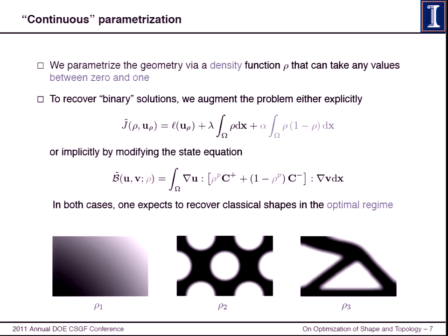The idea is that you augment your problem. For example, for the compliance problem, you either add a penalization term. This penalizes intermediate densities. If rho is between 0 and 1, this is a positive quantity, so you penalize this. This approach typically doesn't actually work very well, because it adds to the non-convexity and non-linearity of your problem.